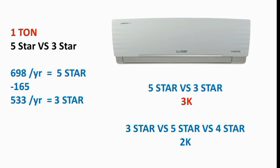Now let's look at the star rating. Lloyd offers this AC in a 5-star and a 3-star variant. What is the difference between these two? For the 1-ton 5-star variant, the current units consumed will be around 533 units, whereas the 3-star variant consumes around 698 units annually.